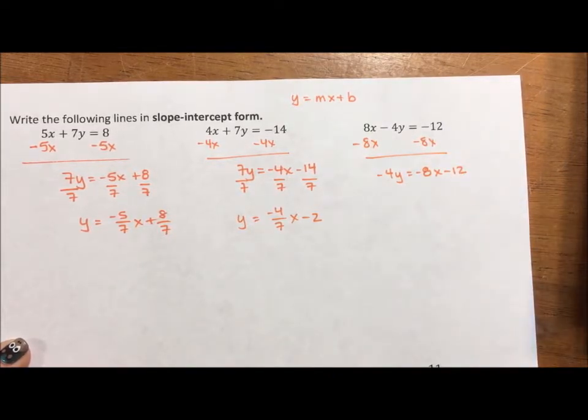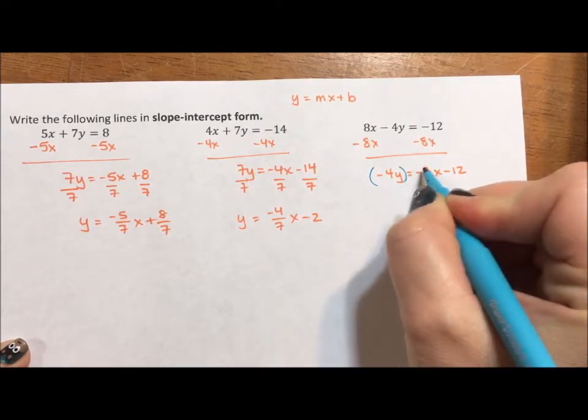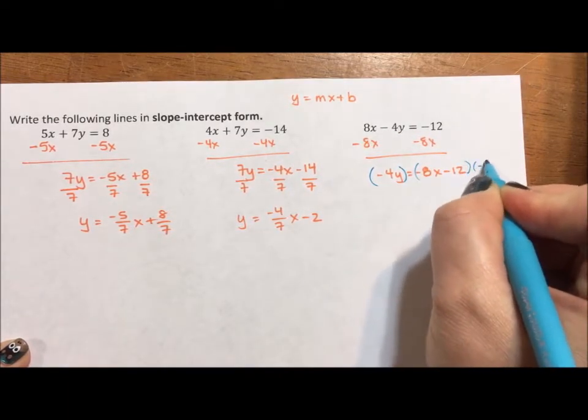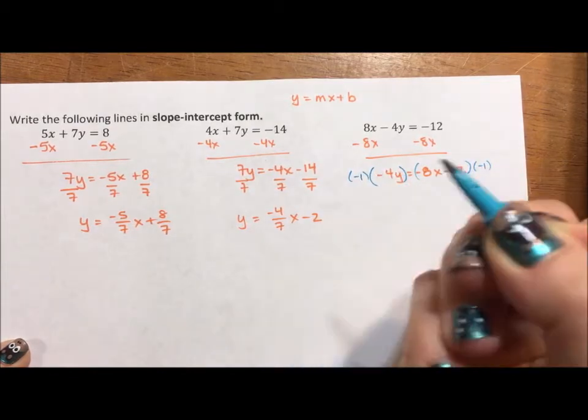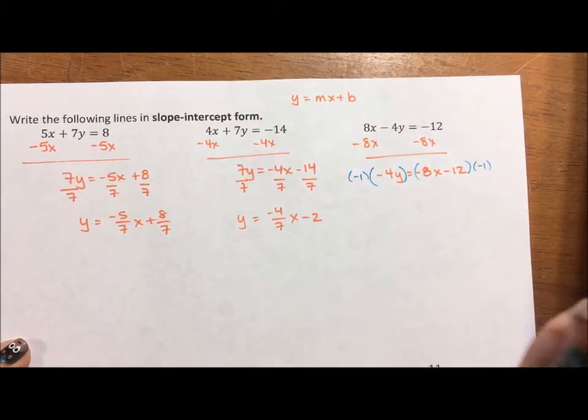I don't really like dividing by a negative. I find that when students divide by a negative, they sometimes make really simple mistakes. So what I want to do is slip in an extra step where I multiply through by negative one. If I multiply through by negative one, it's just a sign changer.